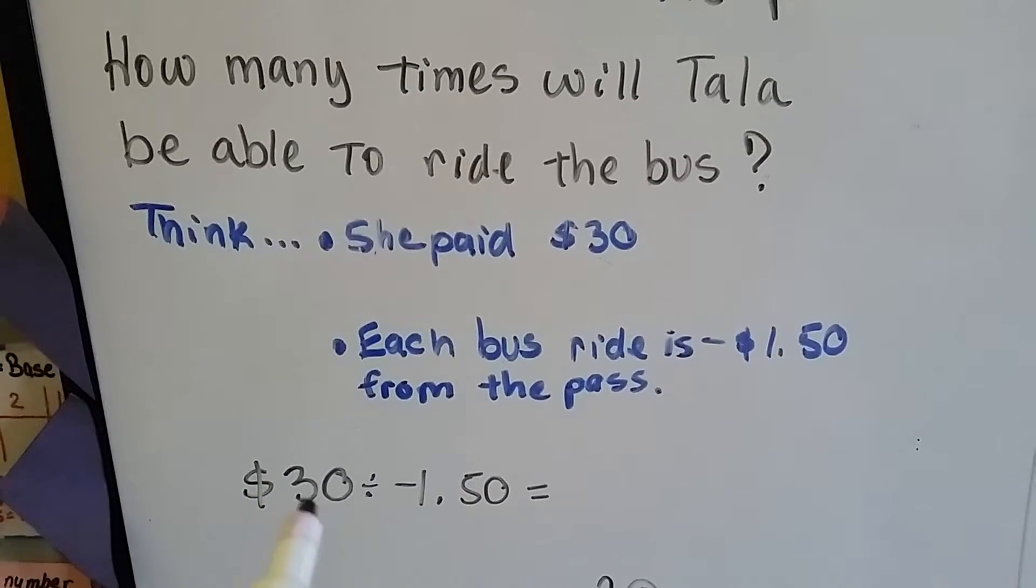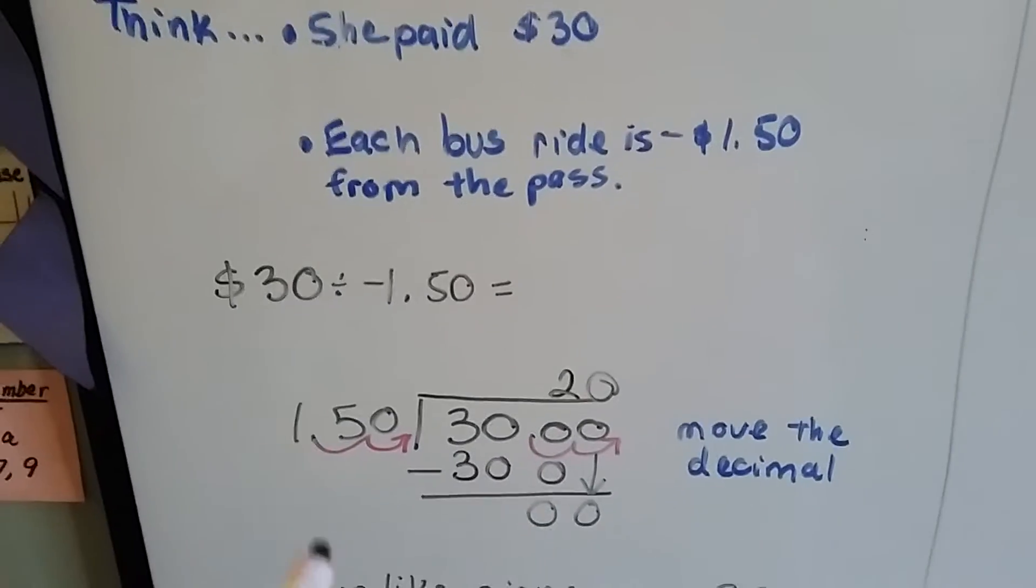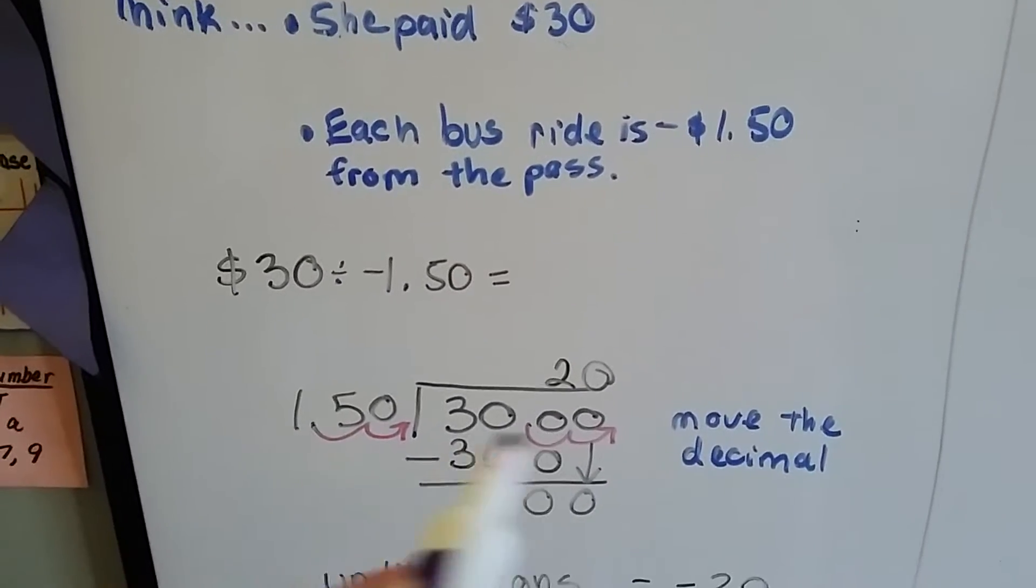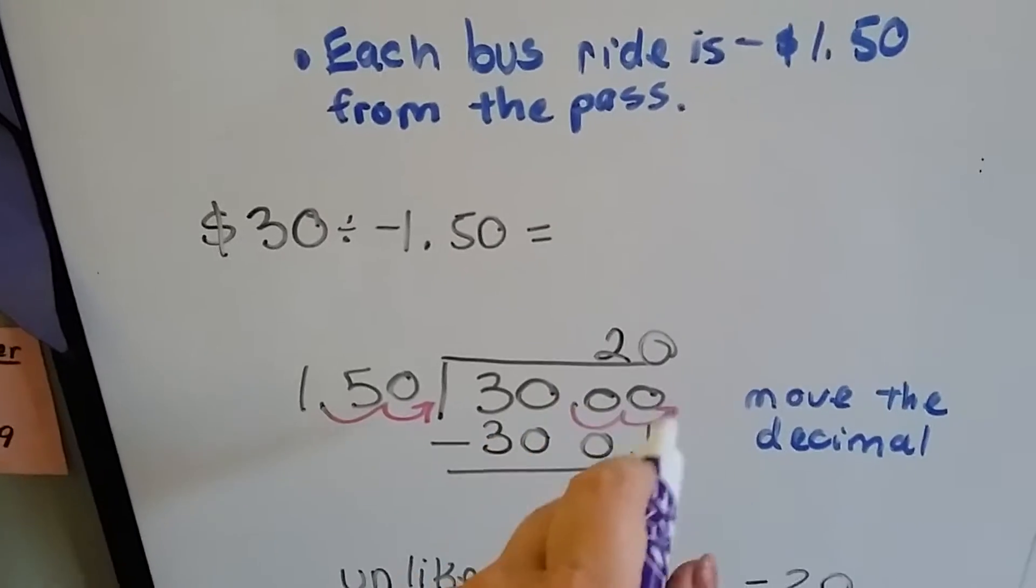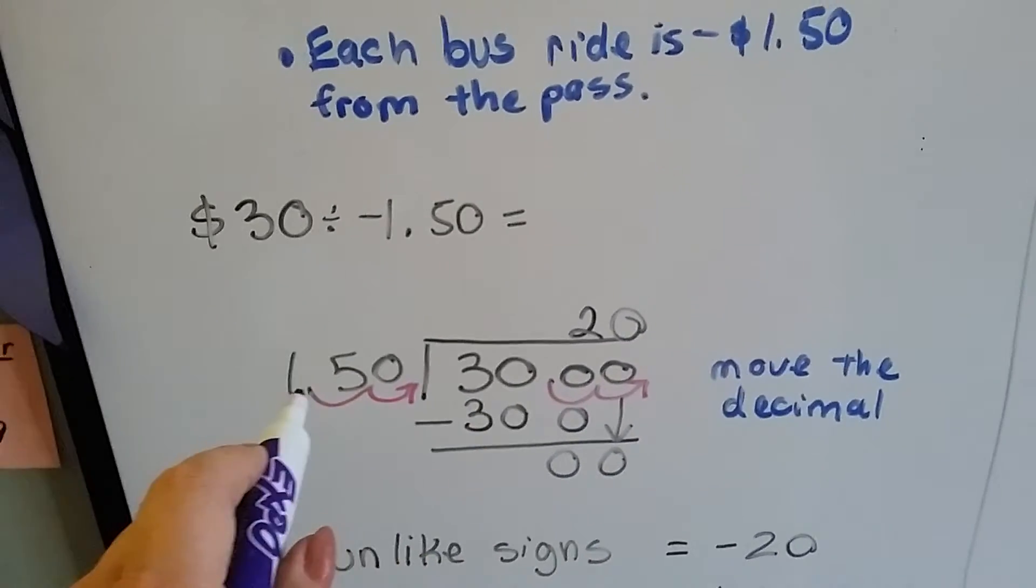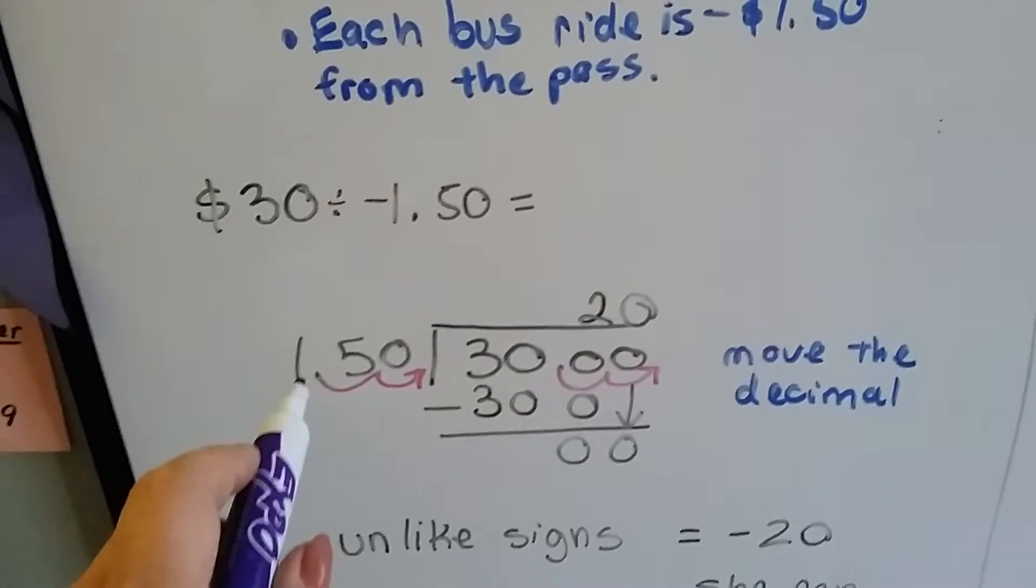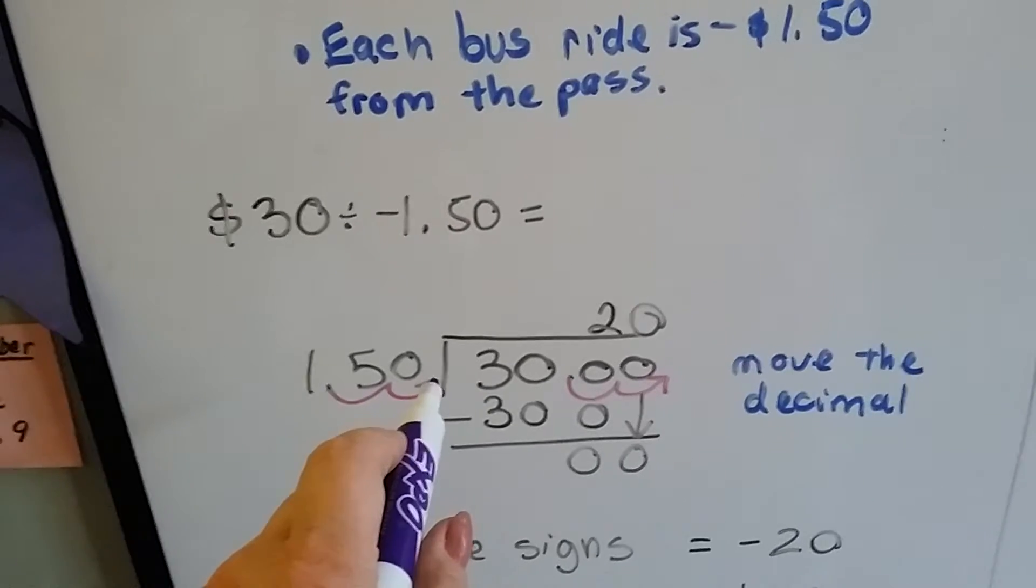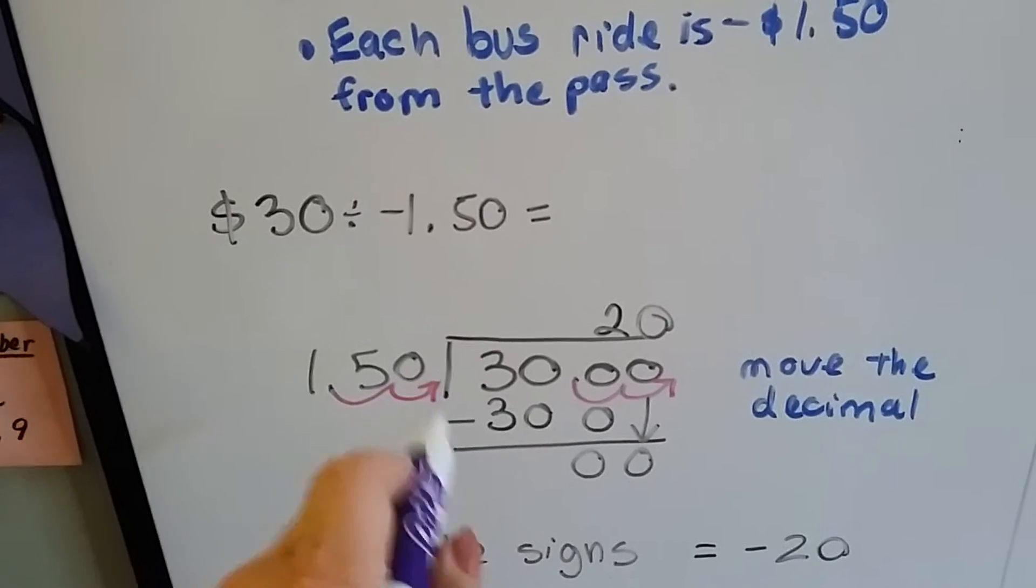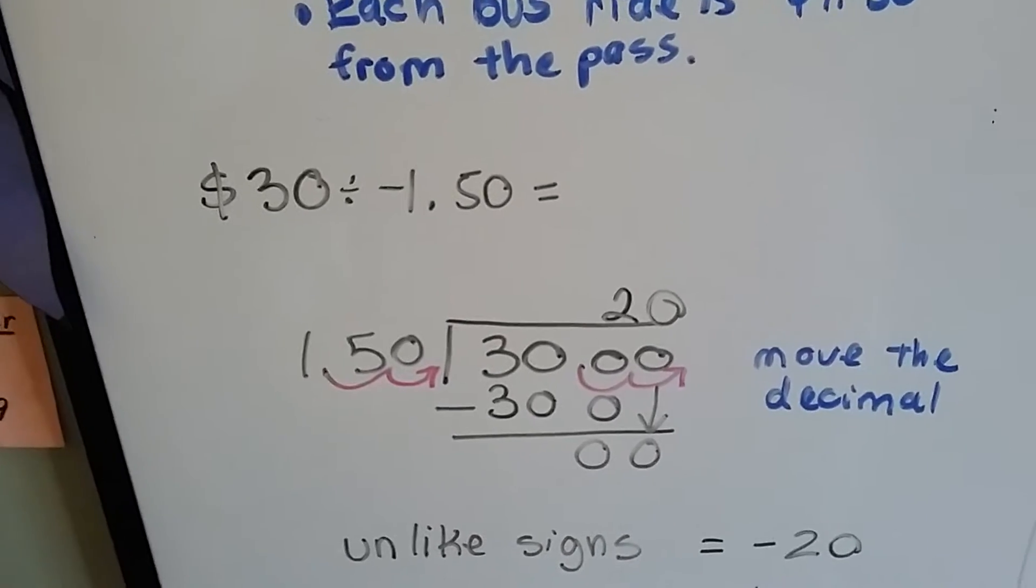So we're going to have to do 30 divided by negative 1.50. $1.50 is 1.50. We need to move the decimal place over to behind the zero in the $1.50 to do this division problem, which means we need to move it over two times in the $30 also. So now we have 150 going into 3000.